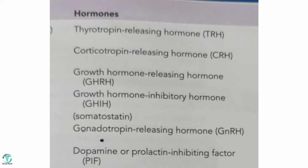To recap, the hormones secreted by the hypothalamus are: thyrotropin releasing hormone, corticotropin releasing hormone, growth hormone releasing hormone, growth hormone inhibitory hormone (somatostatin), gonadotropin releasing hormone, and dopamine or prolactin inhibiting factor. Now we move to the second gland — the pituitary gland.